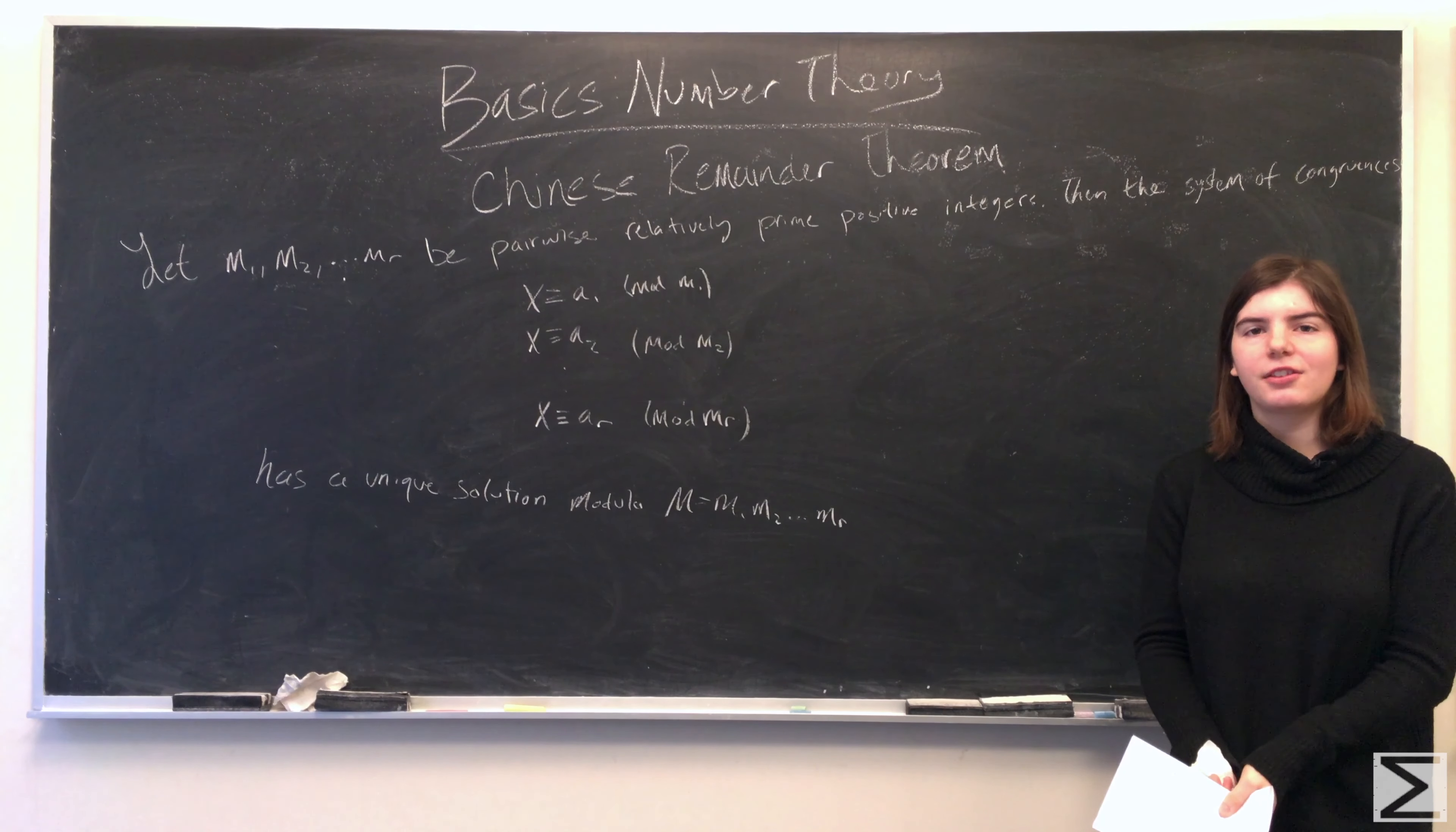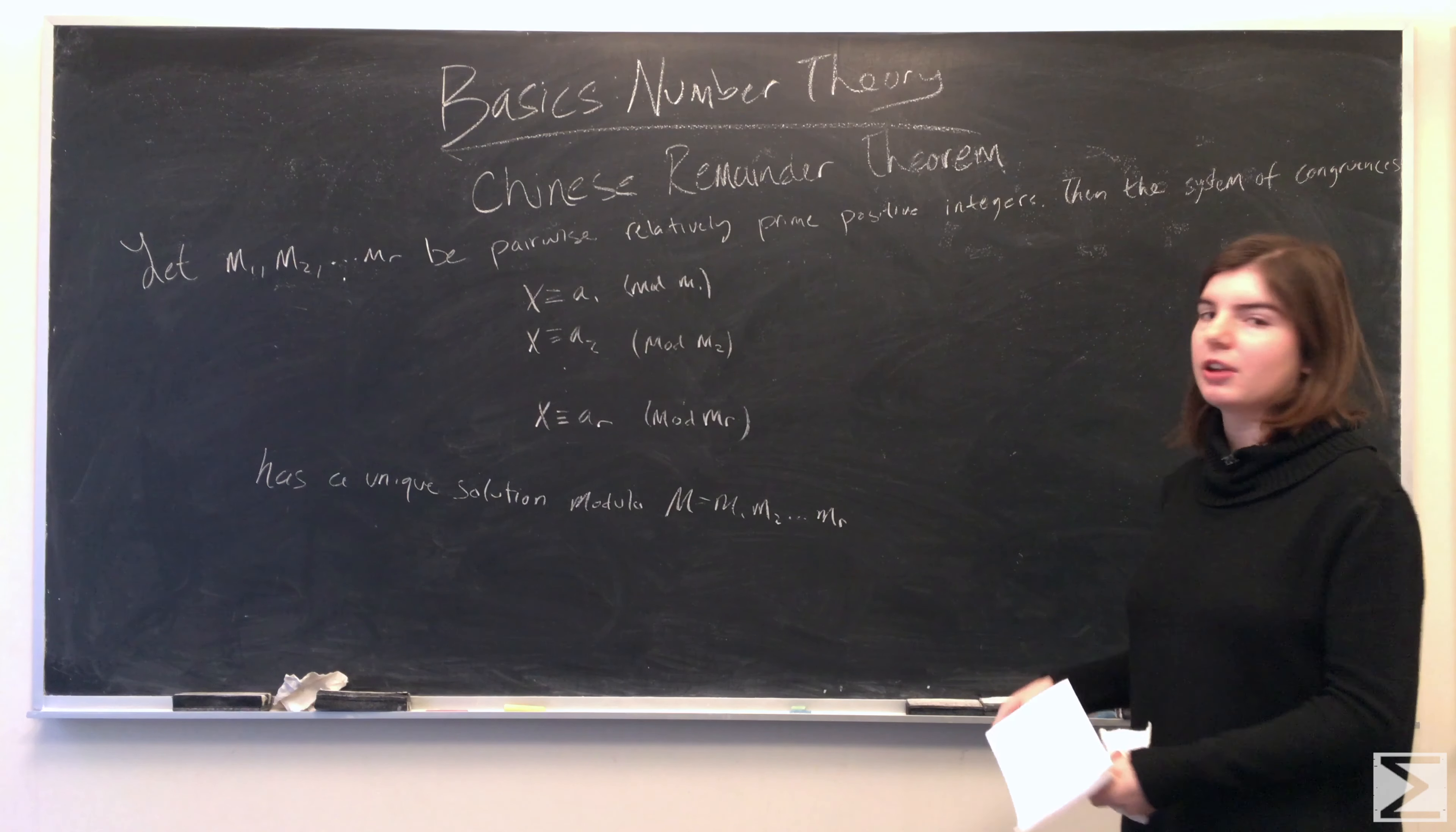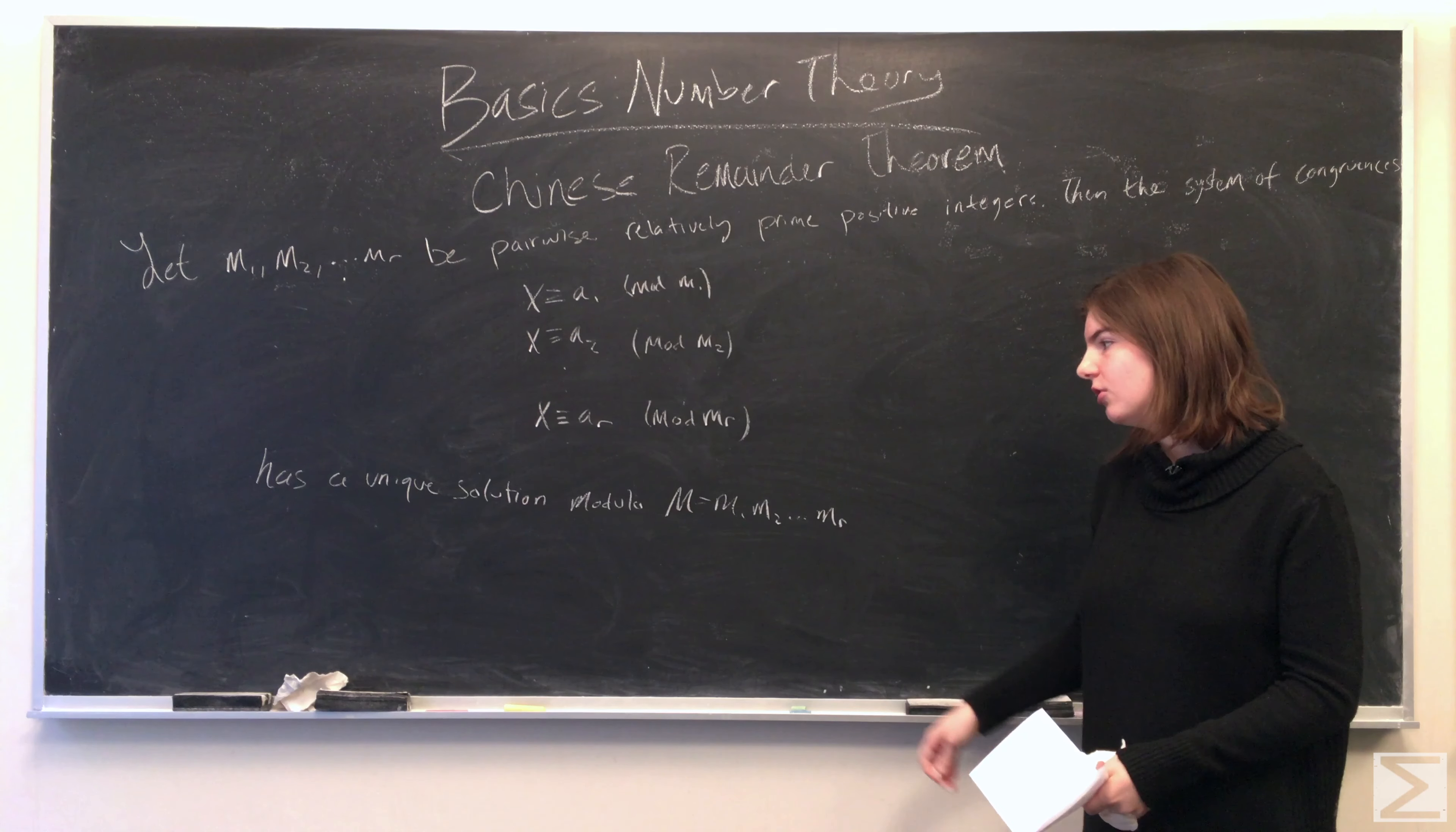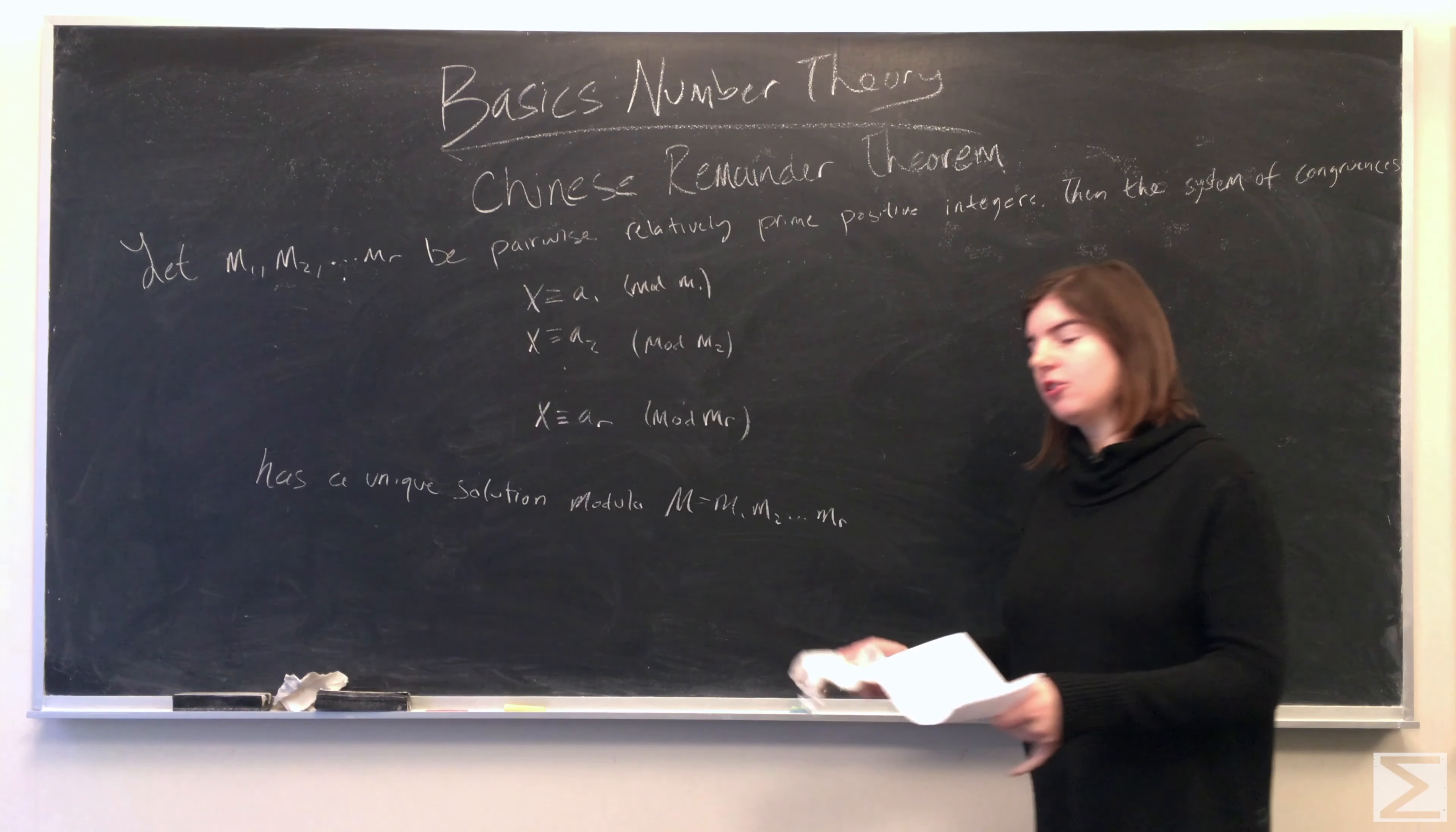Hi, welcome to the Center of Maths video series on the basics of number theory. In this video, we're going to be going over the Chinese remainder theorem. And that says, let m1, m2, all the way through mr be pairwise relatively prime positive integers.